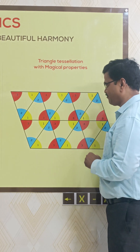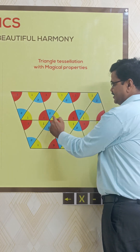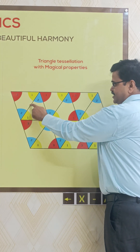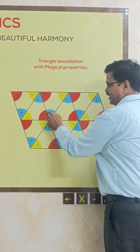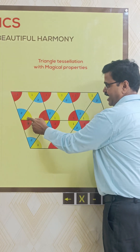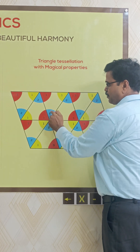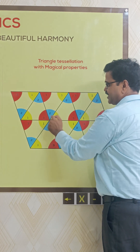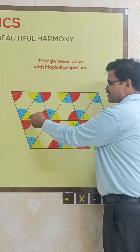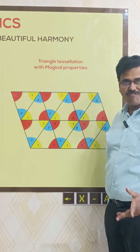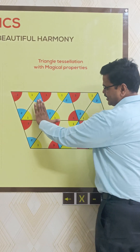Here you see, dear friends. This is a triangle. The internal angles are 1, 2, and 3. 1 plus 2 plus 3 forms a straight line. Therefore, the sum of the three angles of a triangle is 180 degrees.